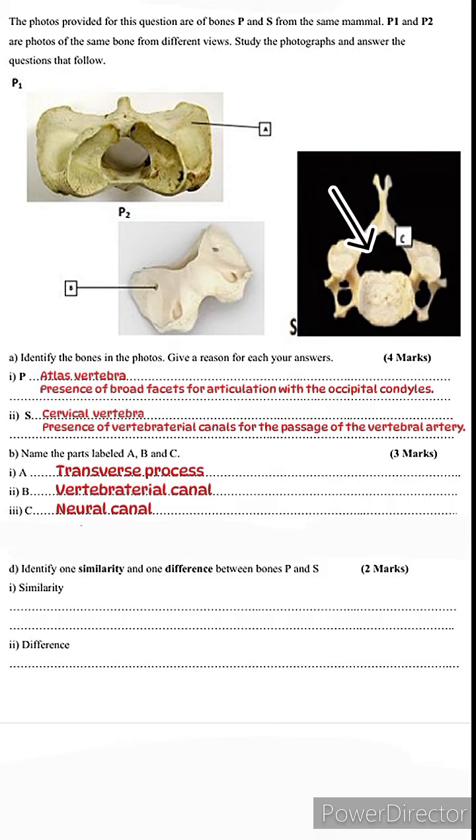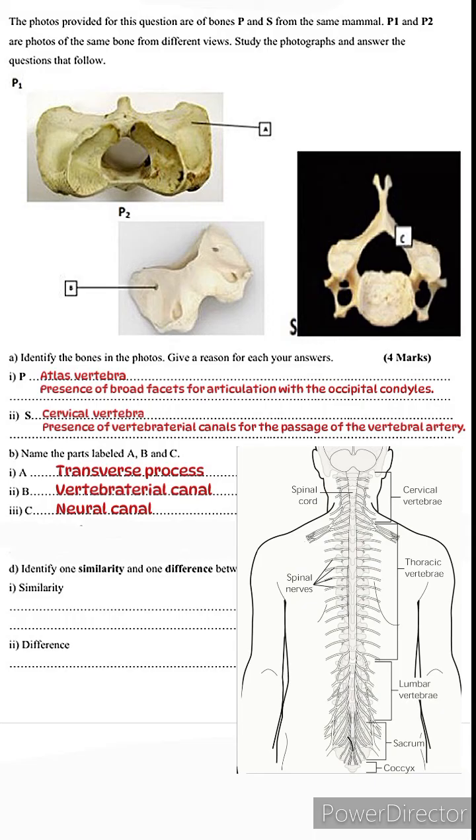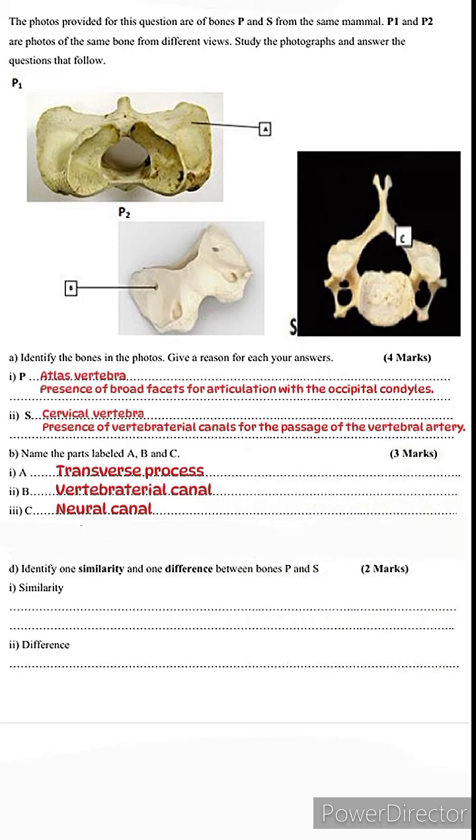Lastly, part C is the neural canal. The neural canal is simply a passage that allows for the passage of the spinal cord. One thing you'll note is cervical vertebrae tend to have a wide neural canal because the spinal cord is widest at the neck region, so it's wide to accommodate the large spinal cord. The last question: identify one similarity and one difference between bones P and S. One similarity is they both have large neural canals and broad transverse processes.